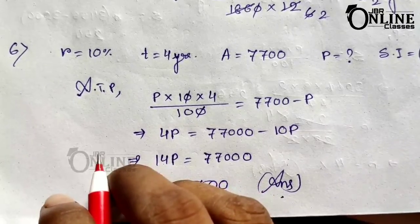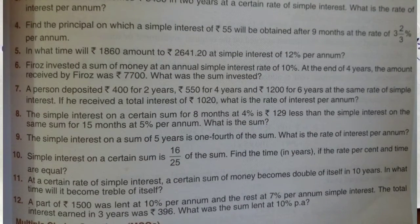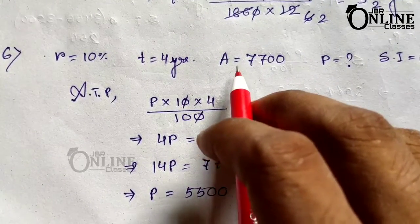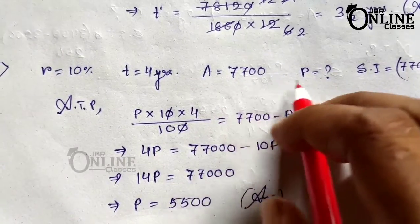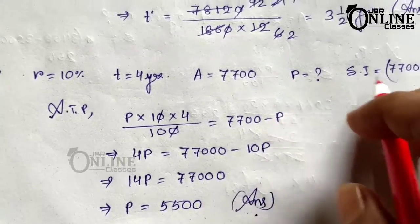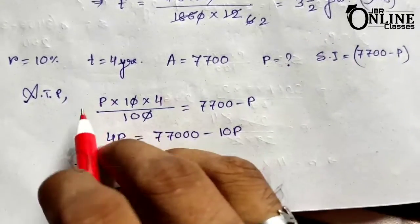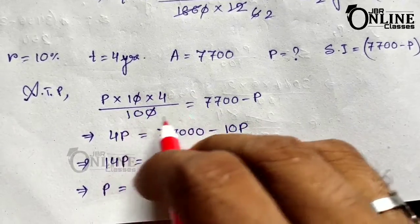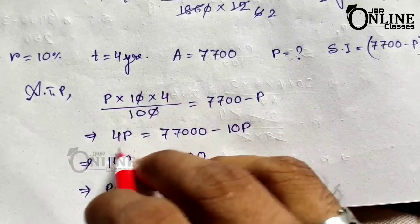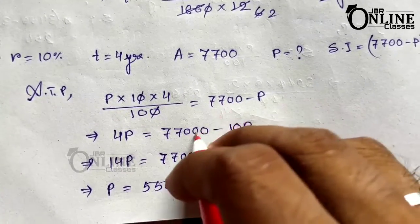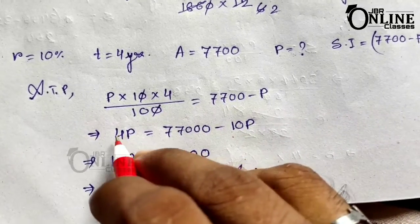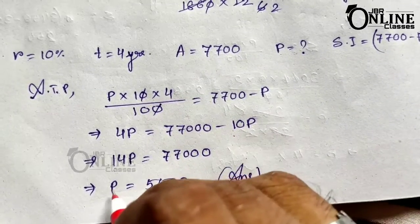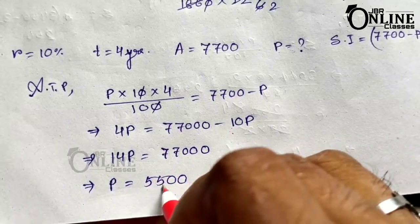Sum number 6: Feroz invested a sum at an annual simple interest rate of 10%. At the end of 4 years, the amount received was 7700. Find the sum invested. Let principal be P. So SI equals 7700 minus P. Using PRT by 100: P into 10 into 4 by 100 equals 7700 minus P, giving 4P equals 7700 minus P. So 4P plus 10P equals 14P equals 77000. Therefore P equals 77000 divided by 14 equals 5500.